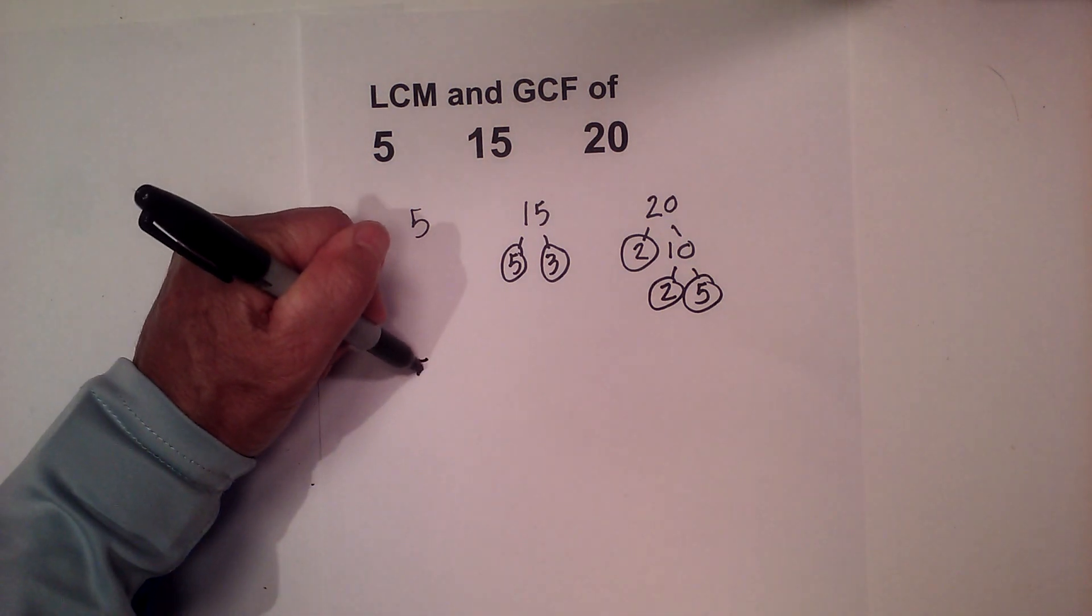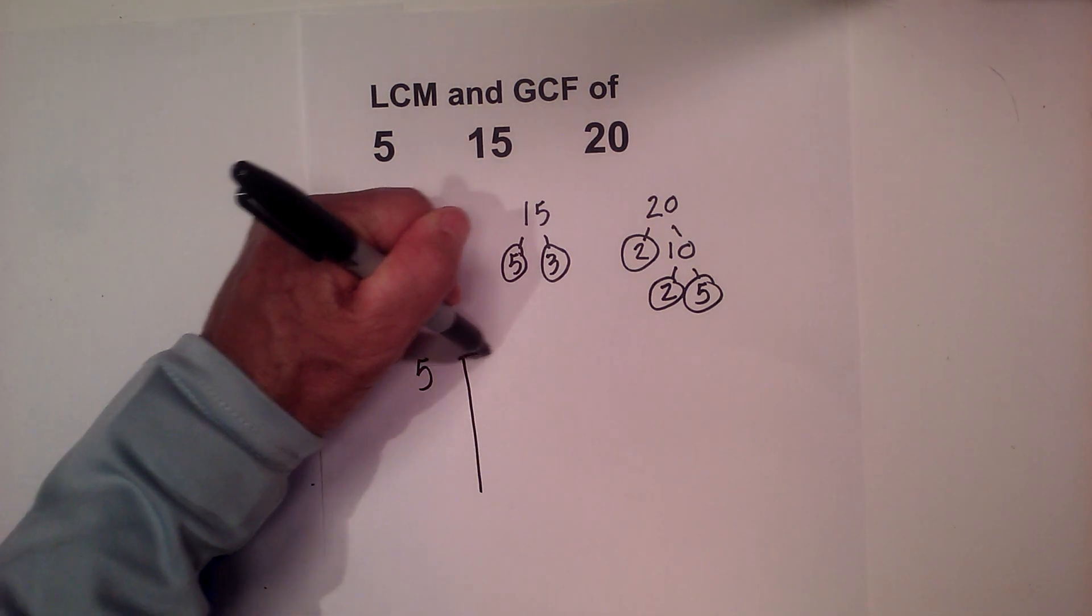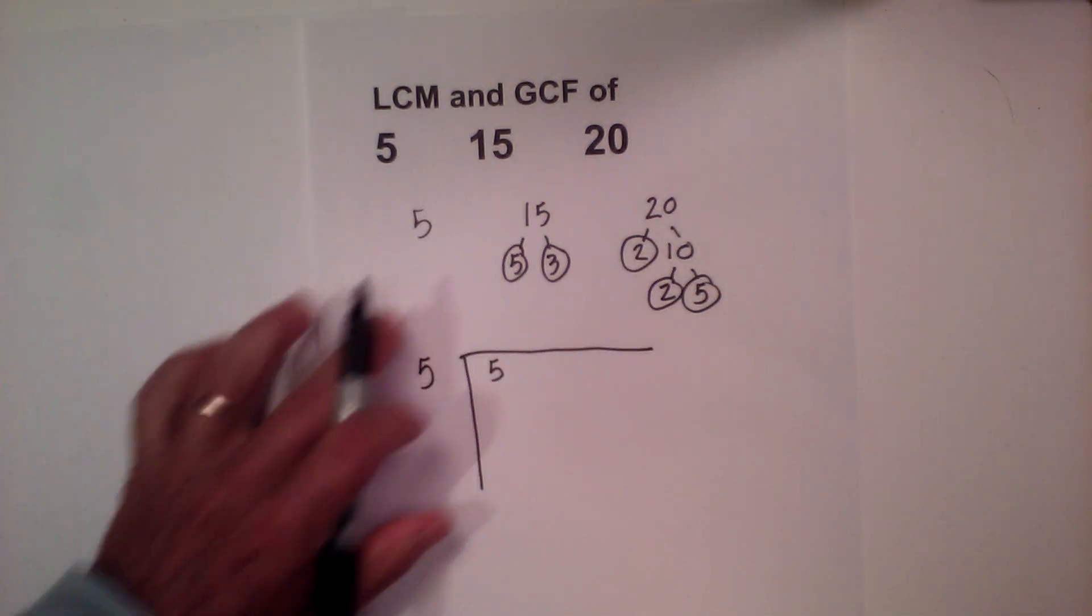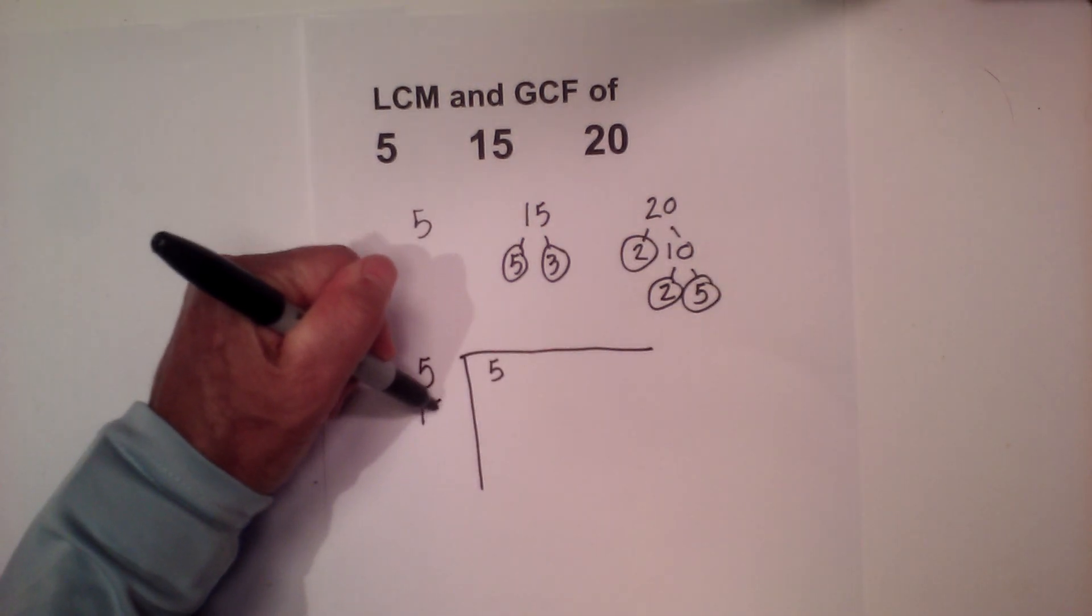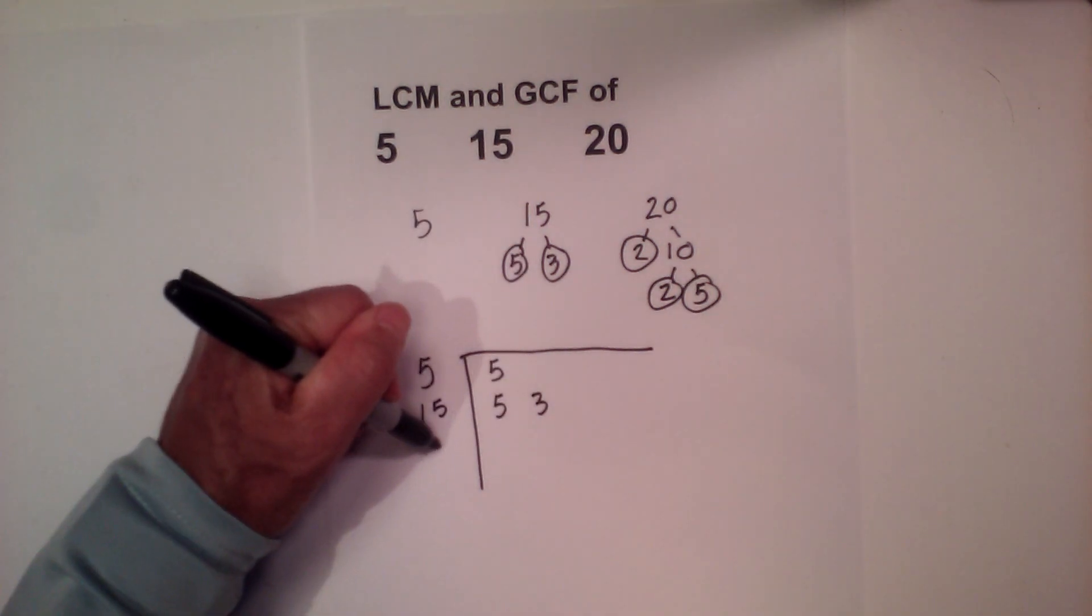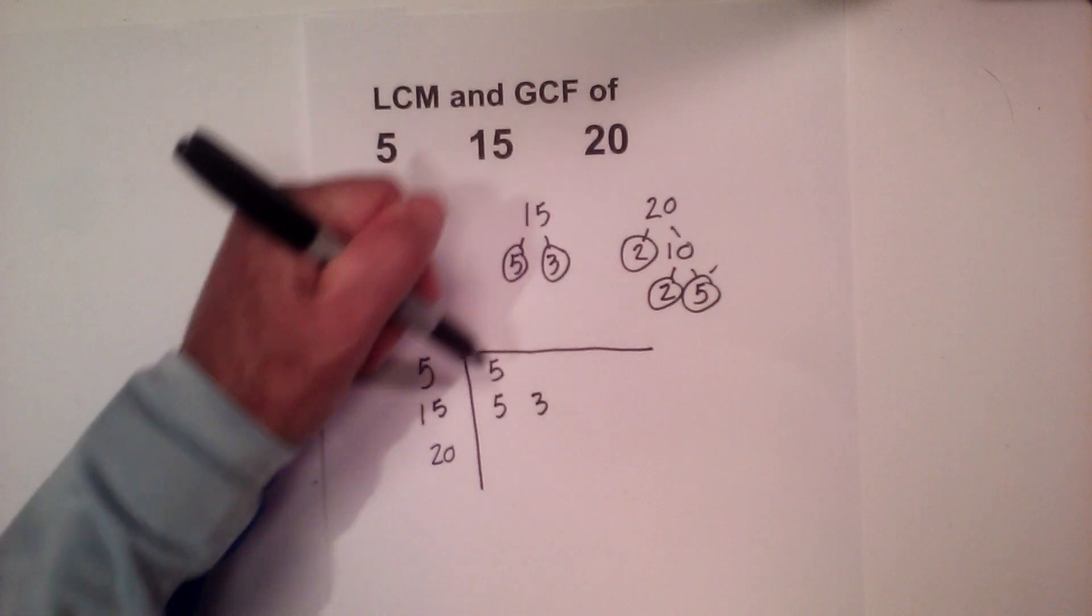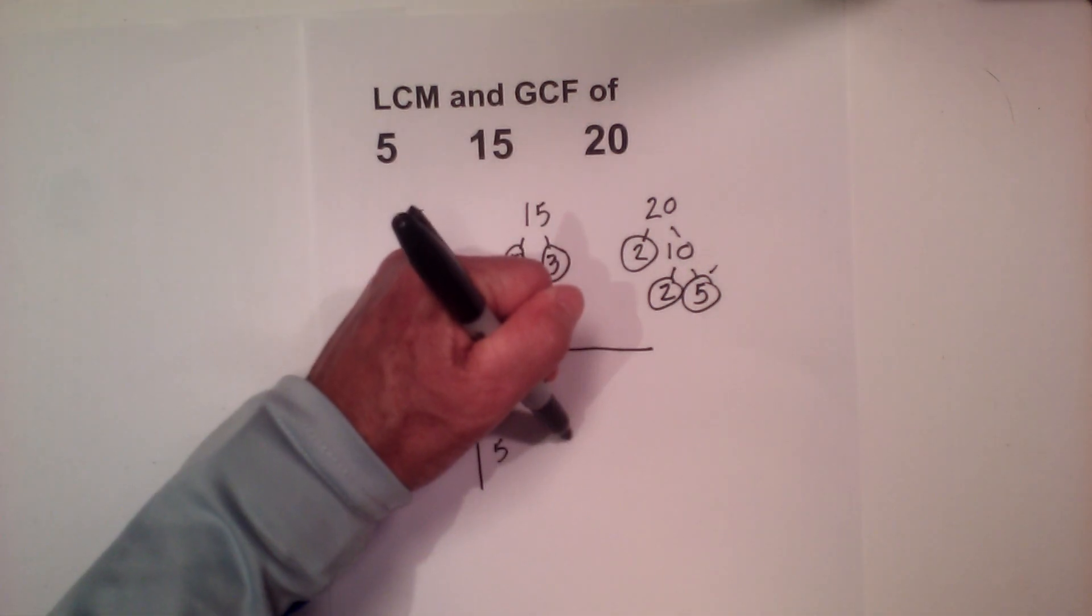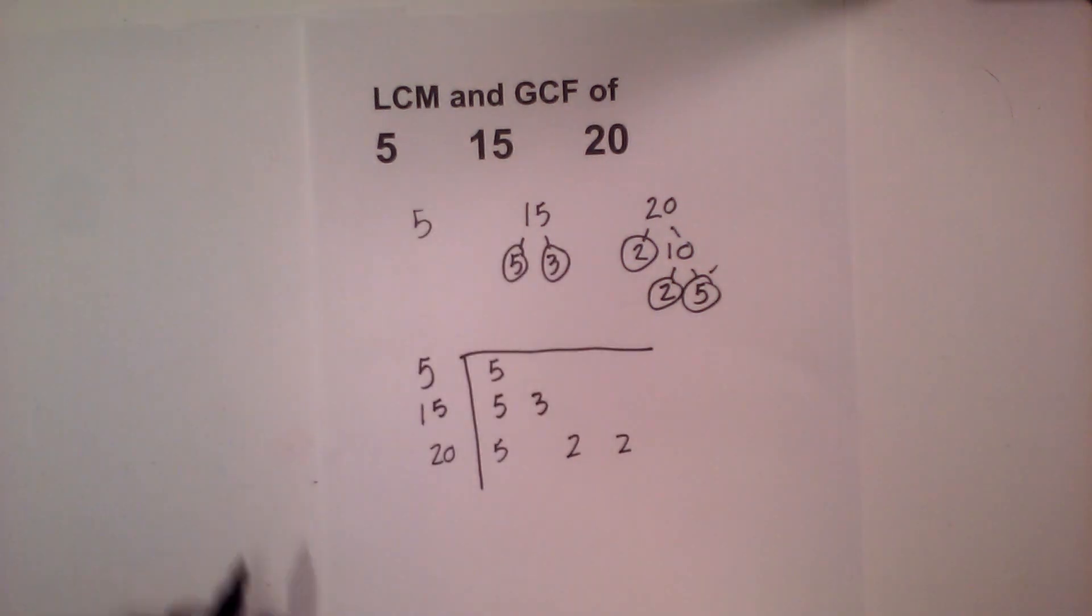Now I am going to create a prime chart. So here is your chart. For 5 I just write a 5. For 15 I am going to write a 5 and a 3. And then for 20 I will write the 5. I am going to put a check by it of 5. I am going to skip the 3 because I don't have a 3. And then a 2 and a 2.